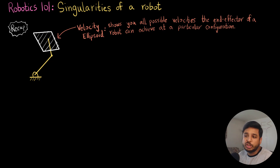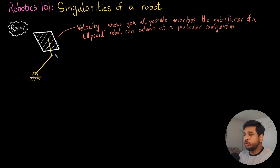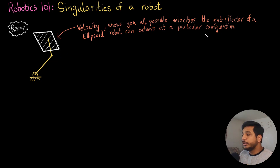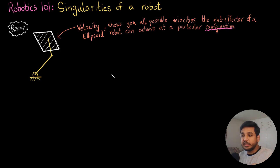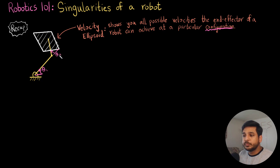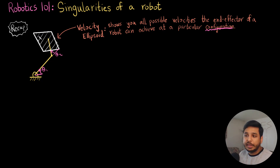Just to give you a bit of a recap: in the previous videos we talked about the velocity ellipsoid. For a two-link robot, the velocity ellipsoid shows you all the possible velocities the end effector of a robot can achieve at a particular configuration. Configuration means at a particular position — in this case described by the two joint angles theta_1 and theta_2.